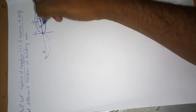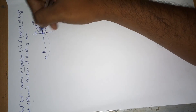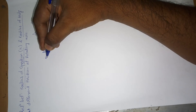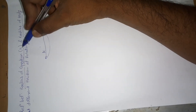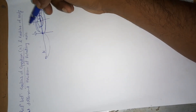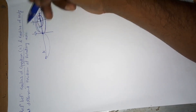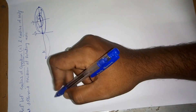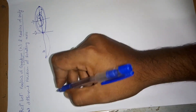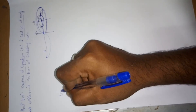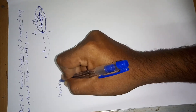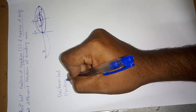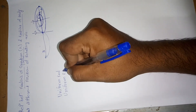By changing the position of the body, we can change the moment of inertia. We can find the radius of gyration for different shapes: uniform rod and uniform ring.